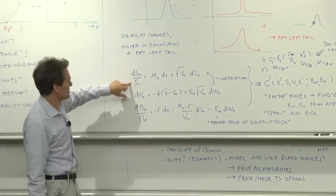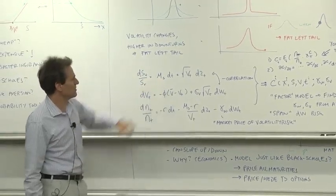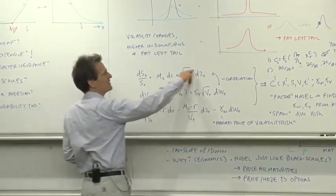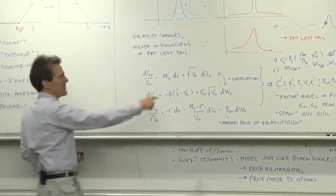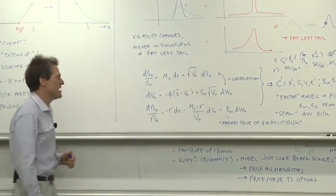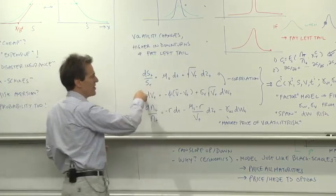In place of the geometric diffusion, dS/S, we have the regular mean, but now we will let the volatility also vary through time. Instead of being a constant sigma, it's going to be square root of v, and then we'll let v, the volatility, move stochastically through time.